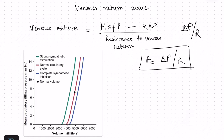We apply the same equation to venous return. The delta P — the pressure gradient for venous return — is determined by mean systemic filling pressure minus the right atrial pressure. Mean systemic filling pressure minus right atrial pressure is the pressure gradient for venous return, and then there is resistance to venous return. So let us try to understand mean systemic filling pressure and resistance to venous return.